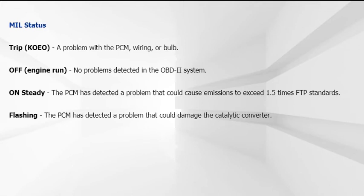MIL Flashing: The MIL will flash once per second if the PCM recognizes a misfire or fuel trim problem that could jeopardize the catalytic converter. Once the engine is out of the RPM and load range posing the greatest threat to converter integrity, the MIL will stop flashing and remain on steady. The MIL will stay illuminated until the vehicle is operated for three consecutive trouble-free trips under conditions similar to those that existed during the initial failure.